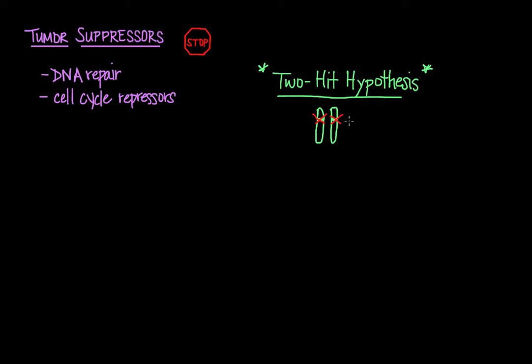The two-hit hypothesis was first proposed with cases of retinoblastoma, a rapidly developing cancer that originates from the immature cells of the retina, the light-detecting tissue of your eye. And I'll write this as PRB for retinoblastoma protein.